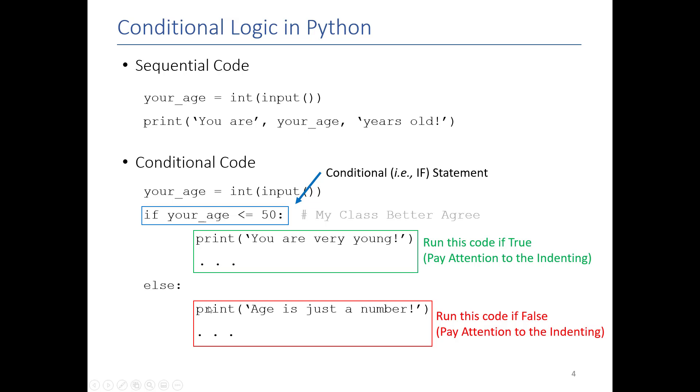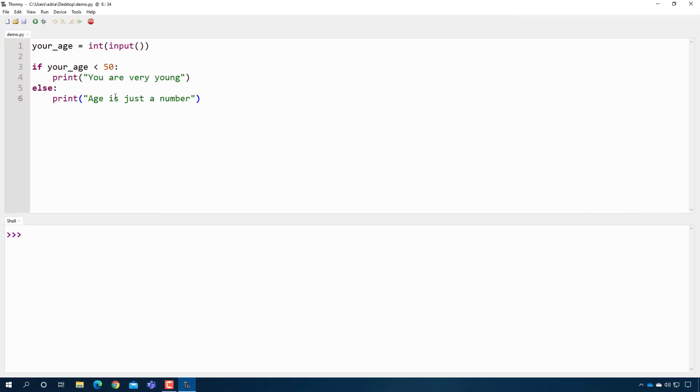So we can actually see this code in action. You can see that I've written basically the same code. When I press play and I type my age I get a statement saying that I am very young, thank you.